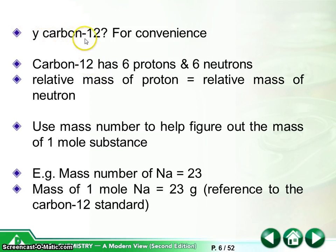But why carbon-12? That is just for convenience. So carbon-12 has 6 protons and 6 neutrons. So we can easily assign the relative mass of protons and the relative mass of neutrons to be 1. So that we can use mass number to help us to figure out the mass of one mole substance.